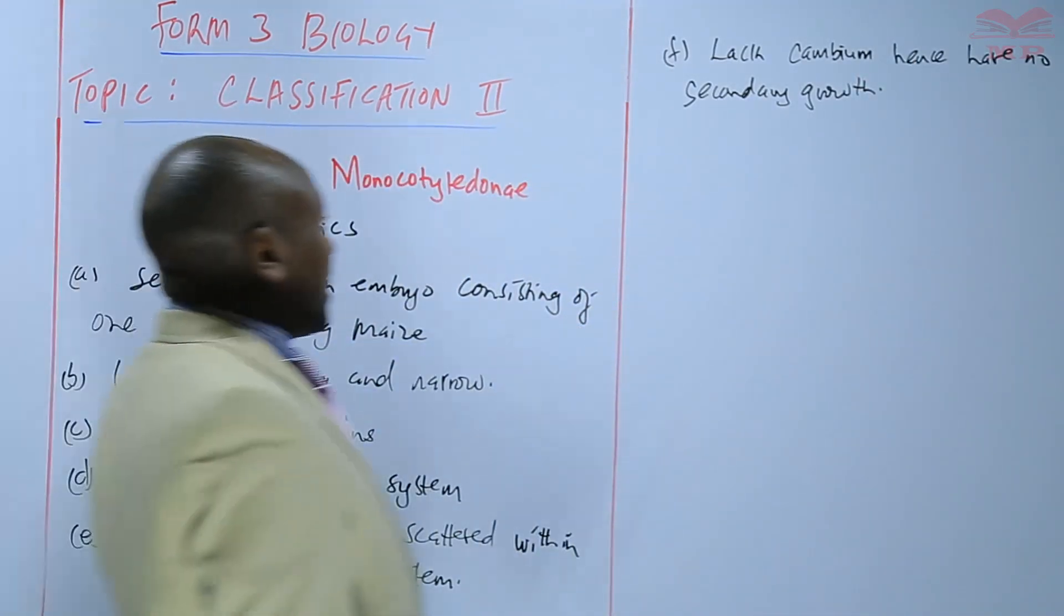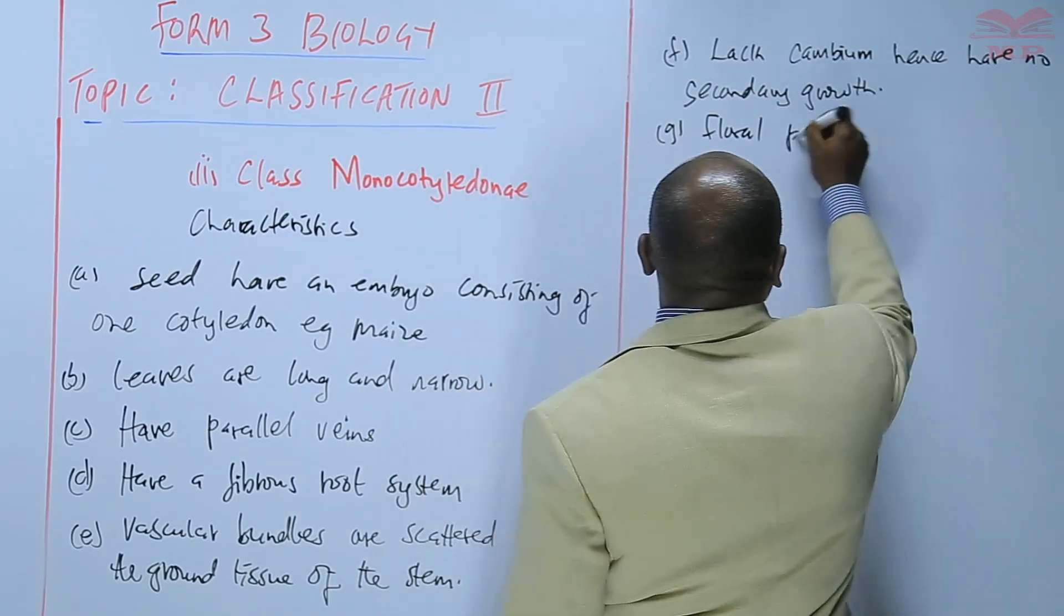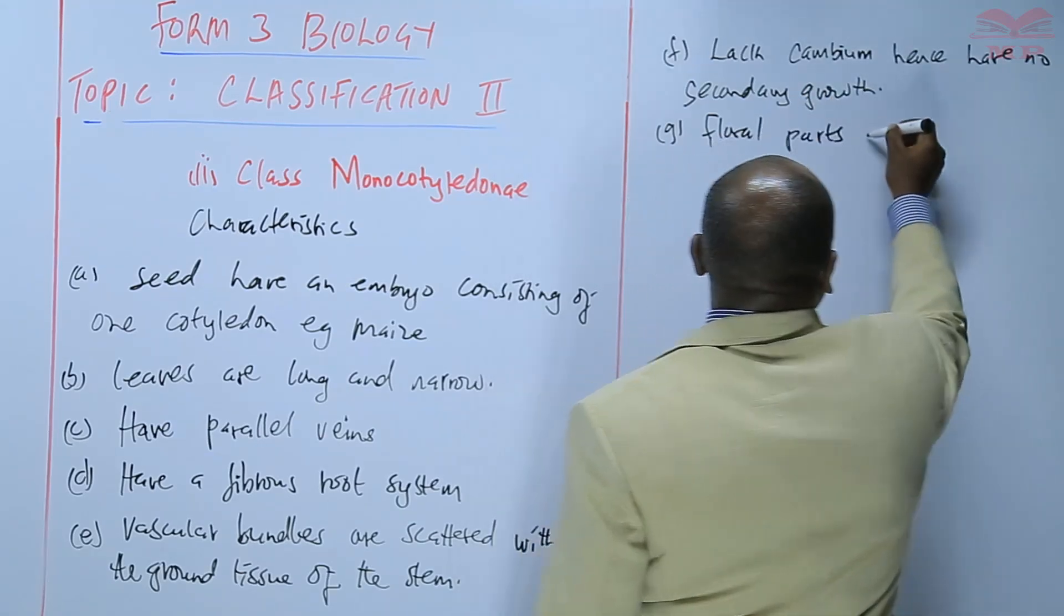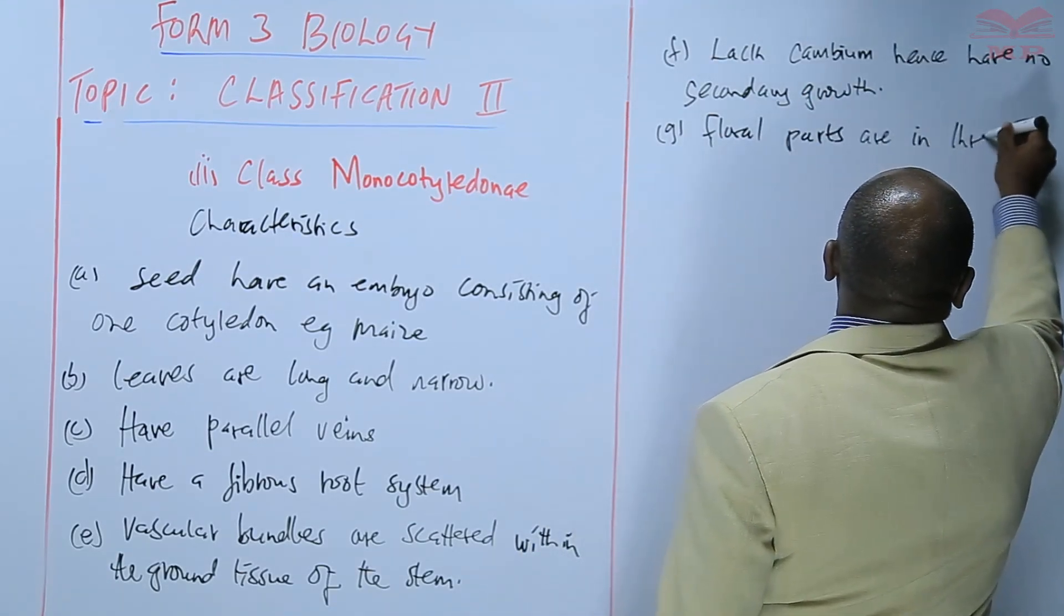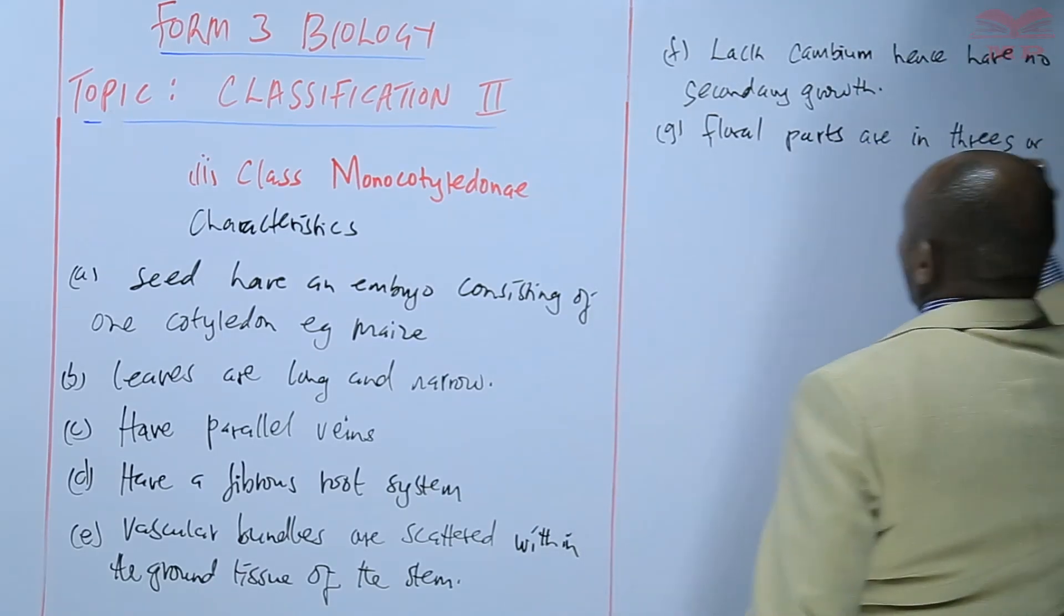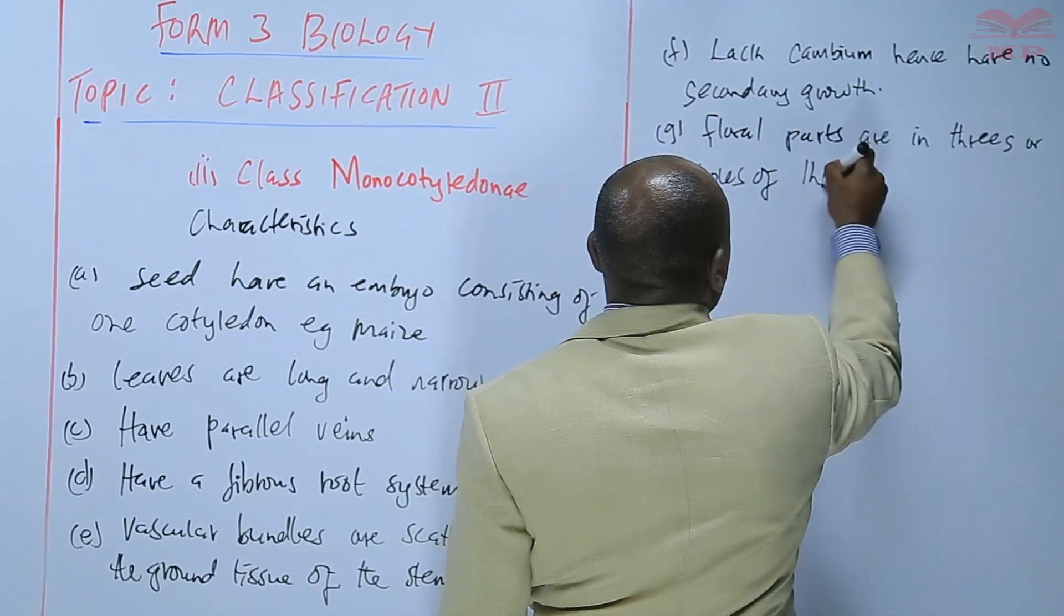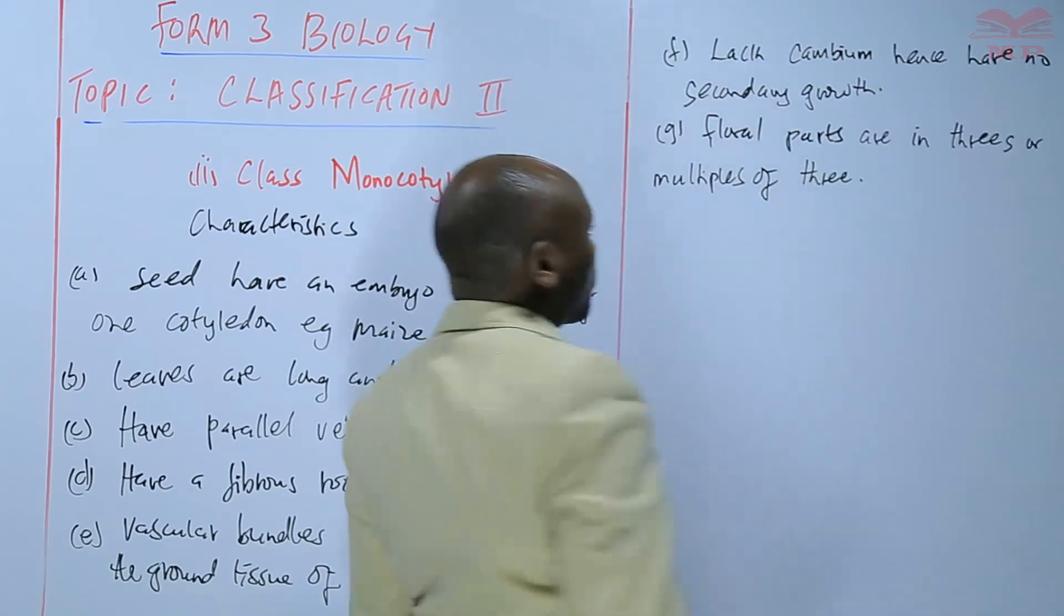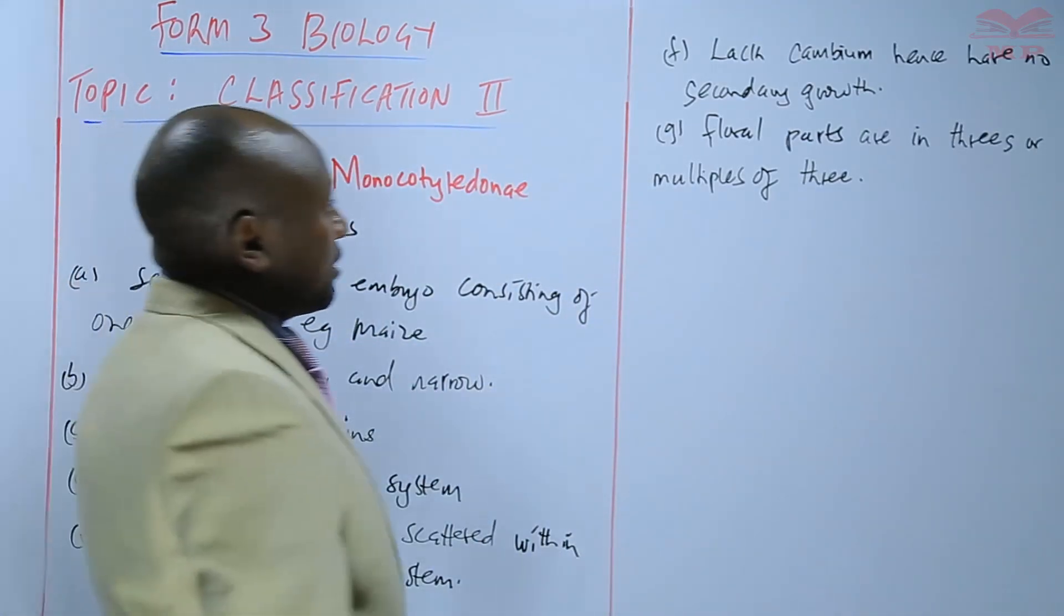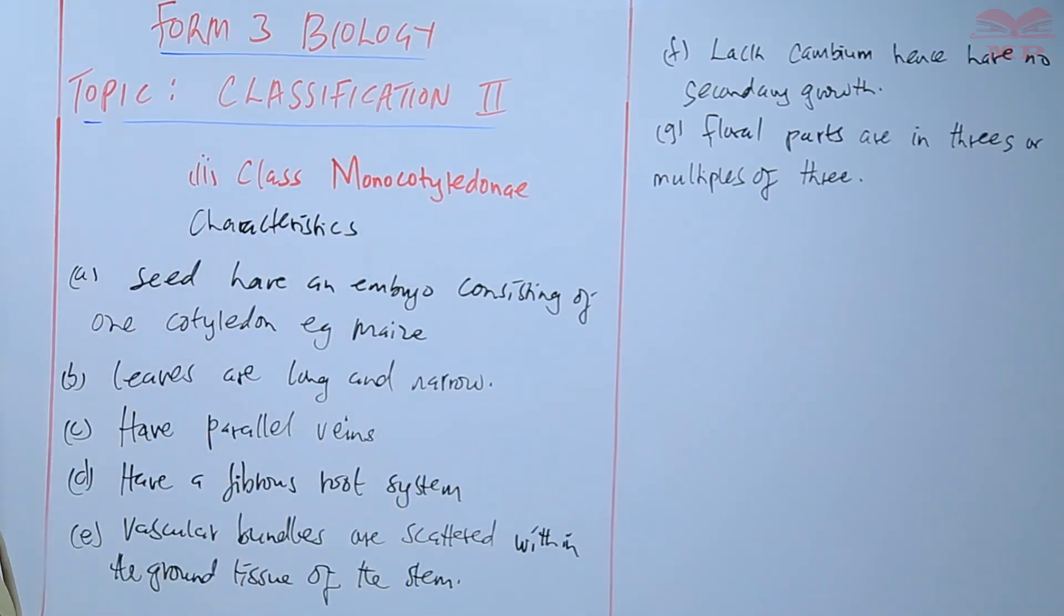In terms of their flowers, floral parts, that is the petals and the sepals, are in threes or multiples of three. Three, six, nine. That is how the petals and the sepals are arranged.